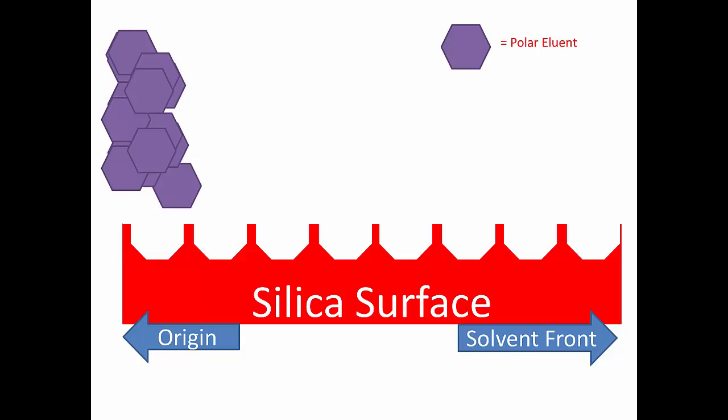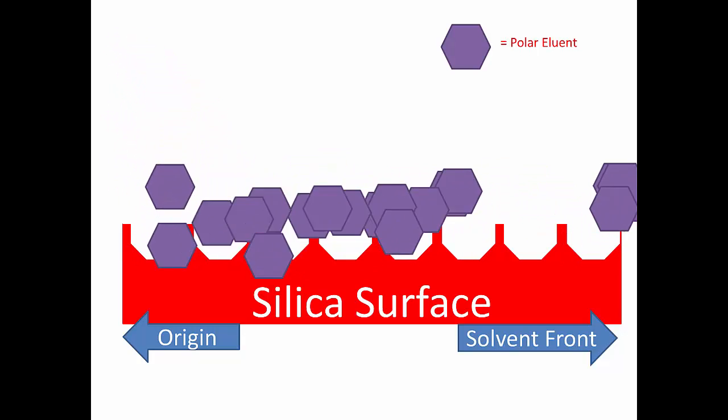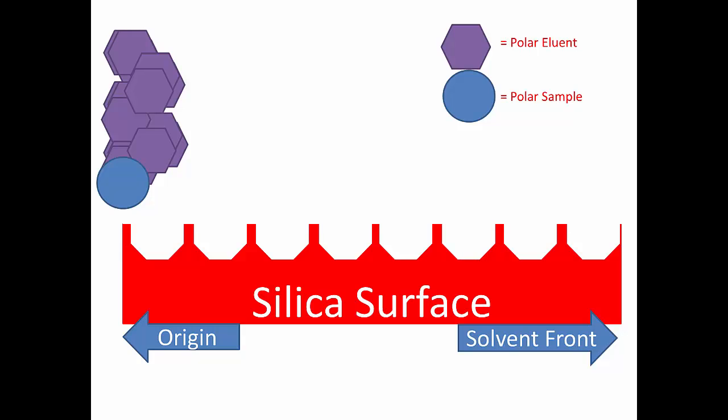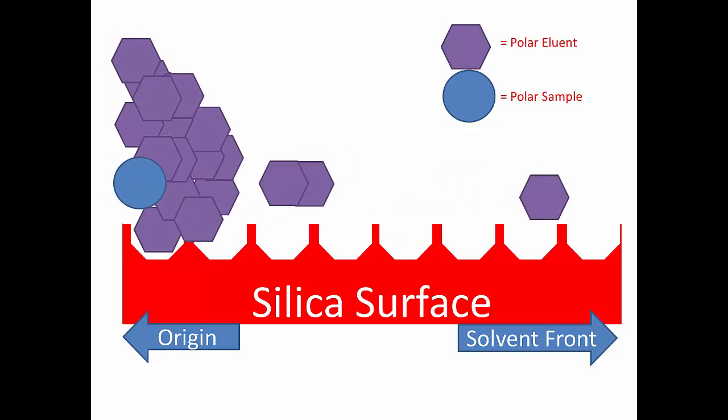In the case of a polar eluent represented by a hexagon, it can now also fit into the octagon. So now there is competition with the sample for the stationary phase.